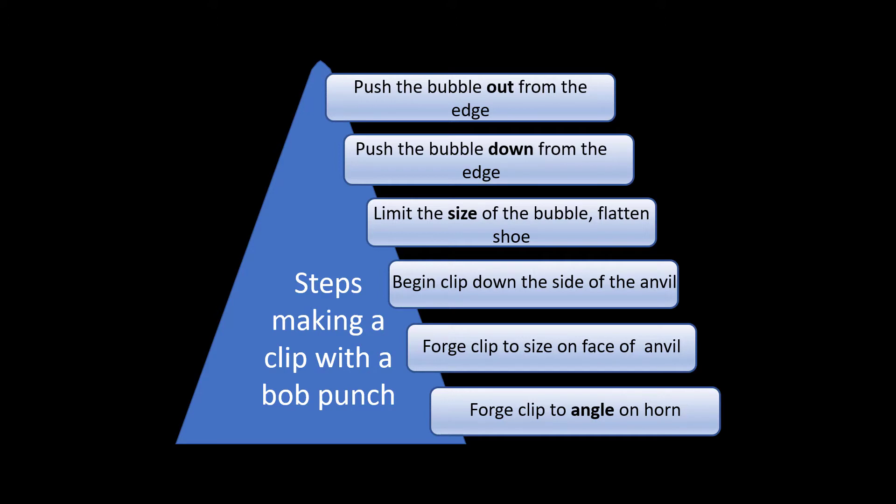There are two distinct steps to making a clip. The first one is to create a bubble from the side of the outer edge of the shoe. And the second one is to create the clip from that bubble.